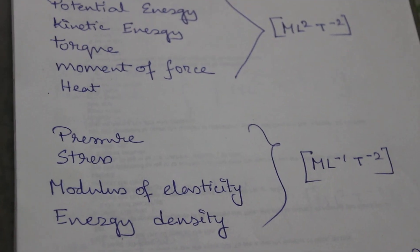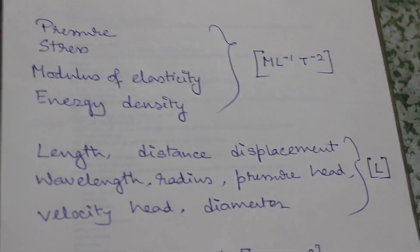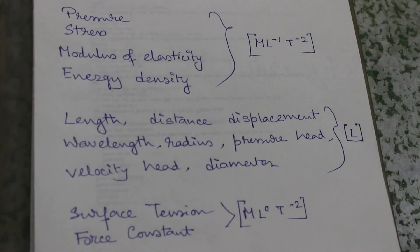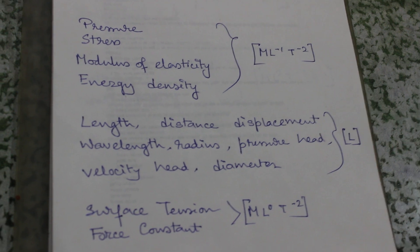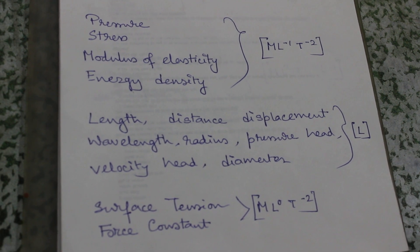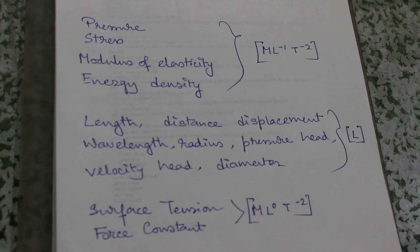Next, there is pressure - pressure means force per unit area - stress, modulus of elasticity, and energy density. Energy density means energy per unit volume. They all have the same dimension: ML⁻¹ T⁻².